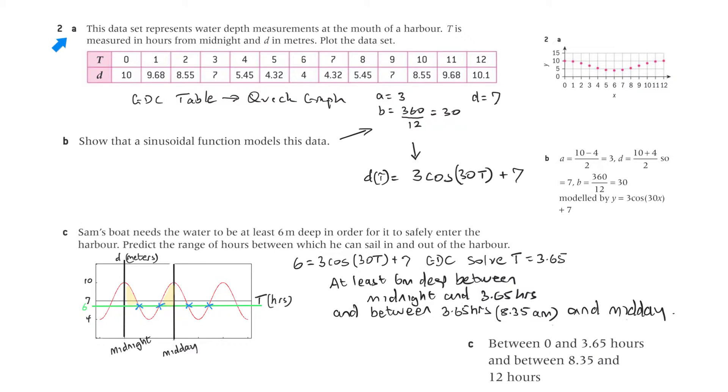Let's have a look at 2. This data set represents water depth measurements at the mouth of a harbour. t is measured in hours from midnight and d in metres. Plot the data set. So I put this into the graphic display calculator as a table, lists and spreadsheets, and then I did a quick graph. And from the graph, I interpreted these. The amplitude is 3, b is 360 on the period which I estimated as 12, and that was 30, and then d is the vertical shift and that was 7.